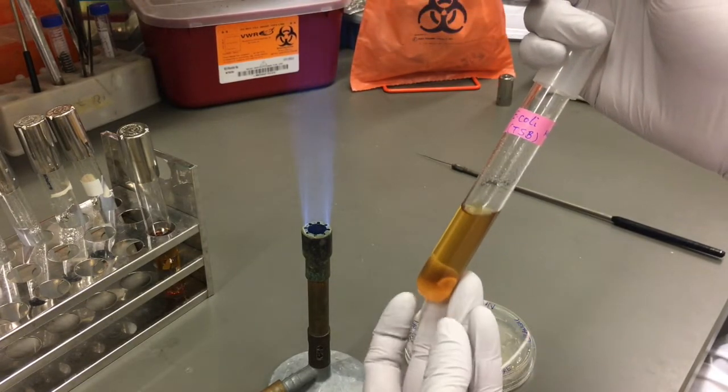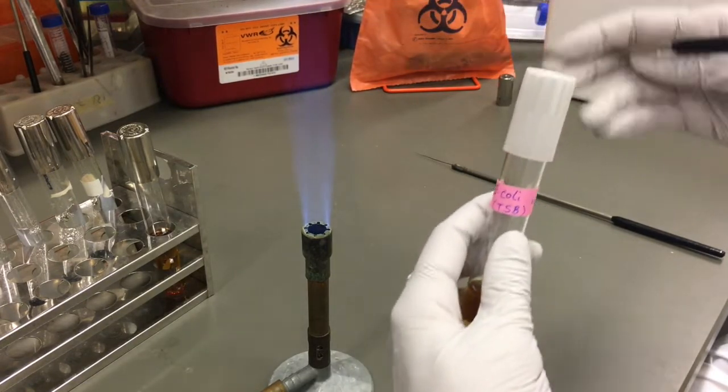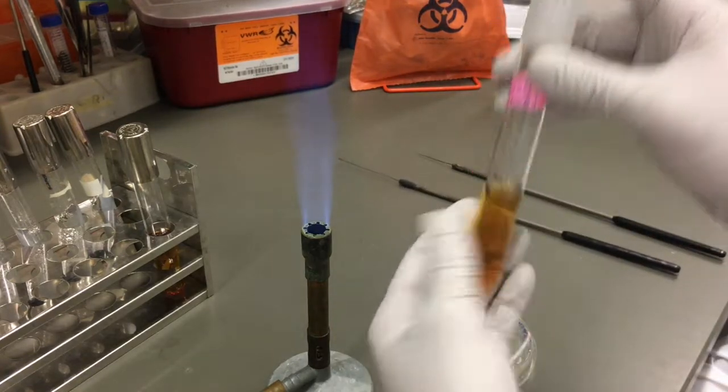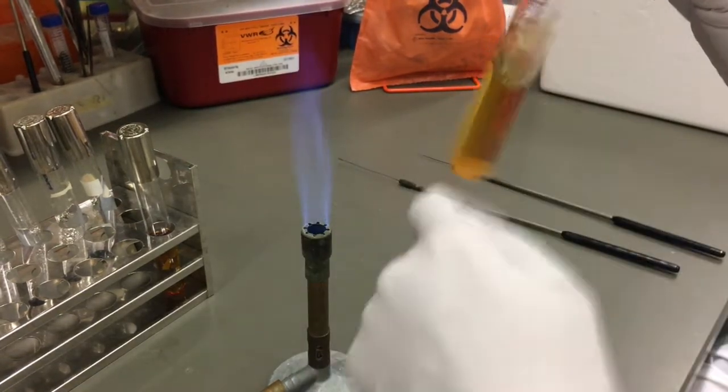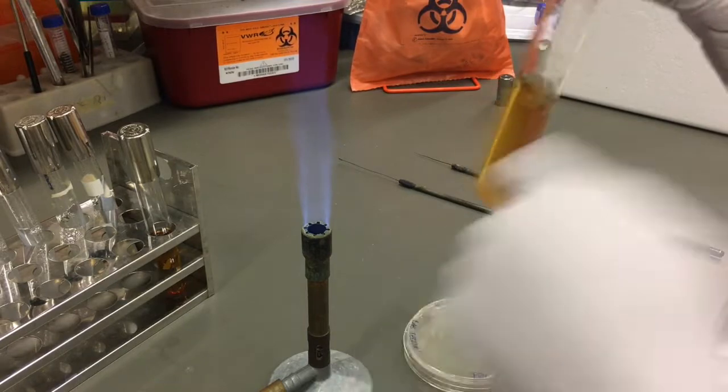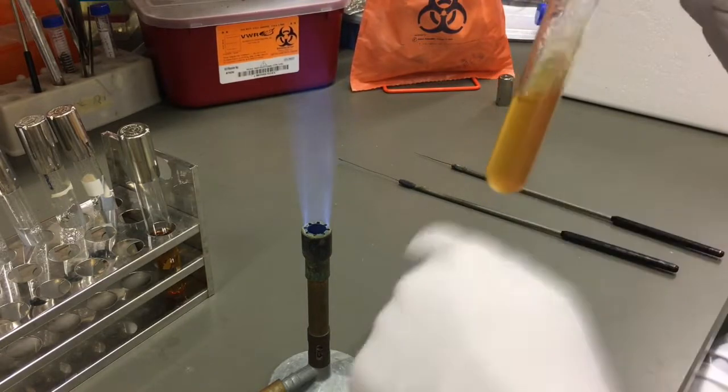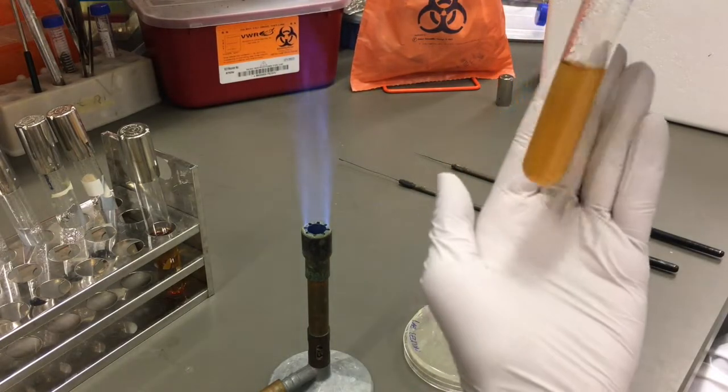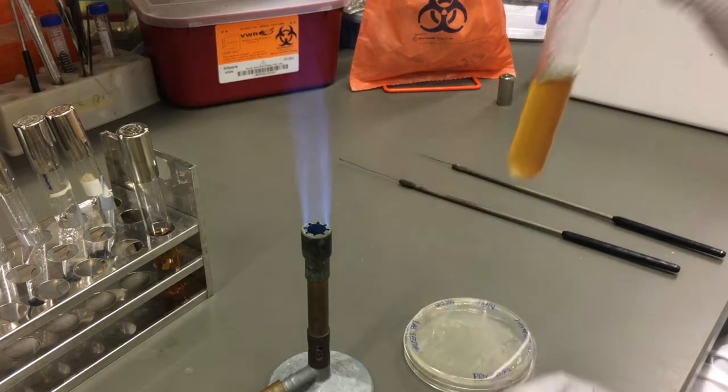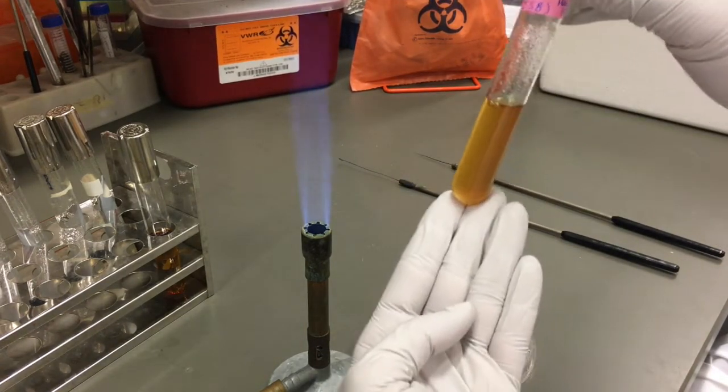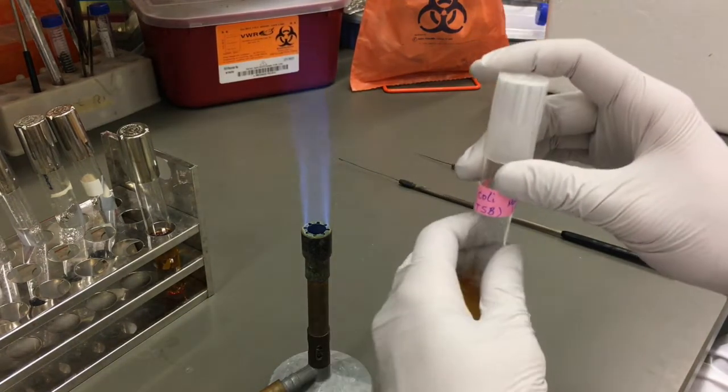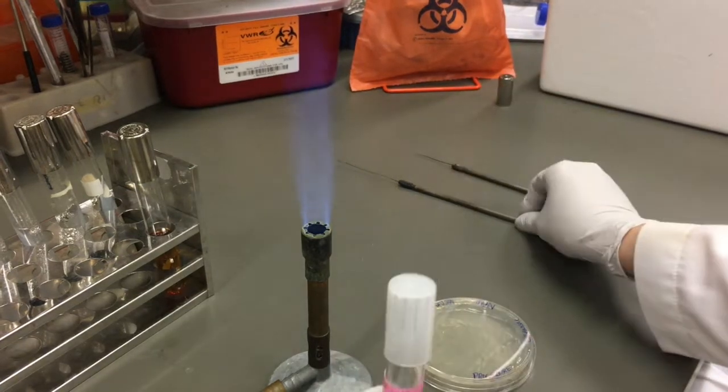Take a look at your broth culture. If you notice that it has settled at the base of the tube, you want to make sure you adequately mix it first, either by vortexing or knocking the base of the tube as shown here to create a mini vortex. Now, as you see, it's mixed well as the turbidity is seen throughout the tube. Since we've placed our inoculation loop on the bench top, we will have to sterilize it again.